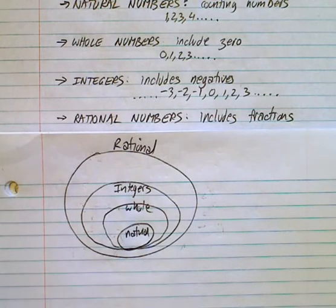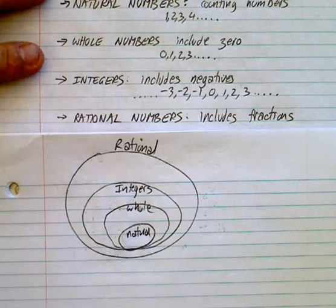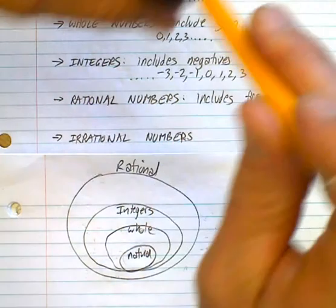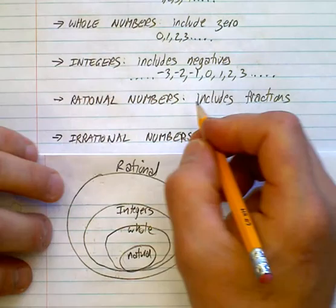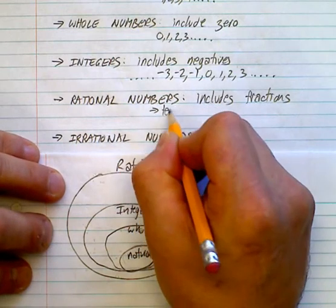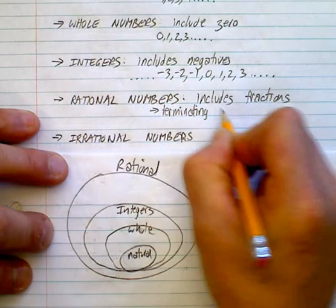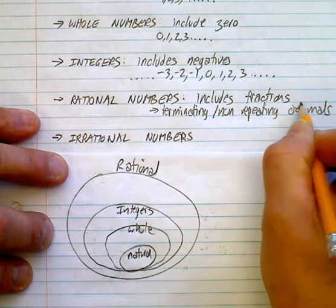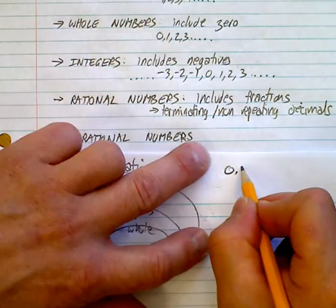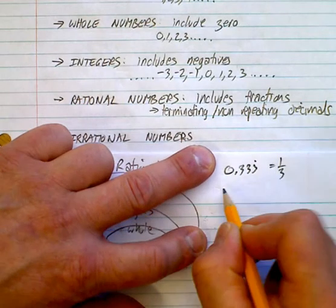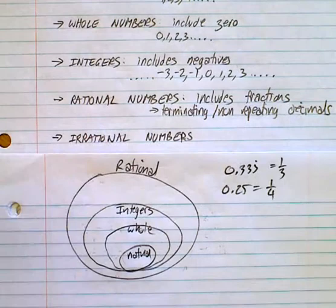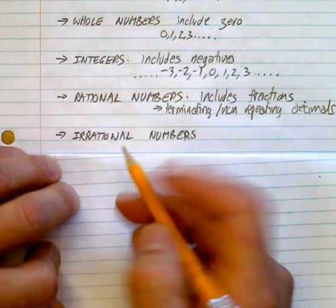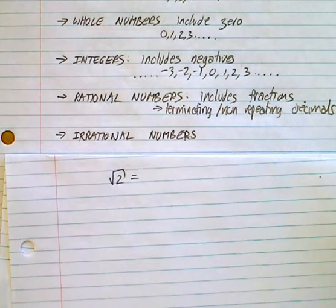What we're dealing with in this section is irrational numbers. Rational numbers are fractions, but they can also be written as decimals. They are terminating and non-repeating decimals. For example, 0.333 repeating is one third, 0.25 is one quarter. Irrational numbers like the square root of 2 couldn't be written as a fraction.